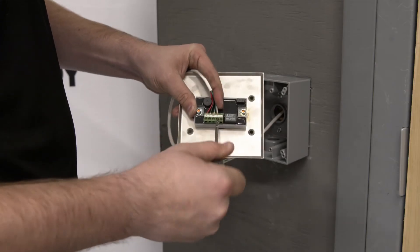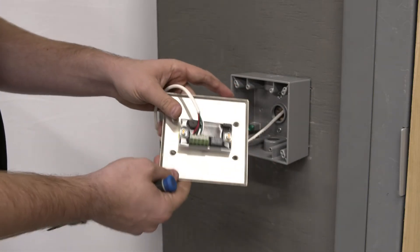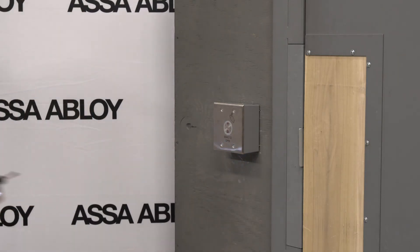Tighten the screws on each of the terminals to ensure the wires are secure. Now you can mount your wave-to-open switch to the wall.